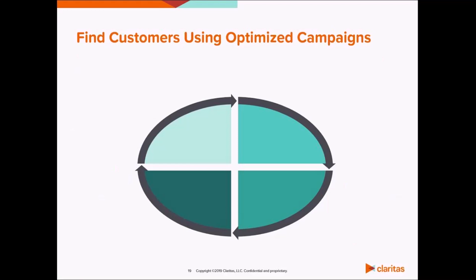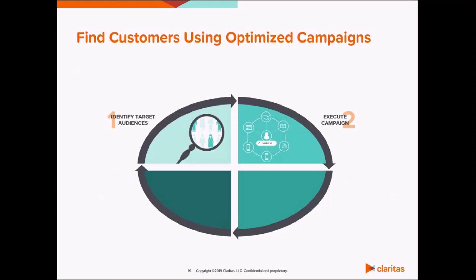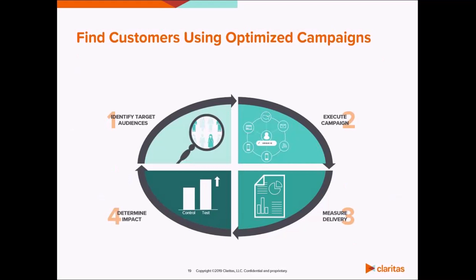Advertisers invest a lot of resources into their marketing because they know better marketing means a better customer experience. Claritas helps its clients maximize their marketing potential by finding their best customers and helping engage them in the right way. Our closed-loop framework does this by identifying which audiences have the highest likelihood of responding to a media campaign, reaching those audiences in the right channels both offline and online, validating that their marketing campaign is going according to plan, and measuring how well the campaign influenced consumer behaviors. Each step of the process creates an opportunity to refine a marketing strategy and ultimately improve a customer's experience through their purchase journey.